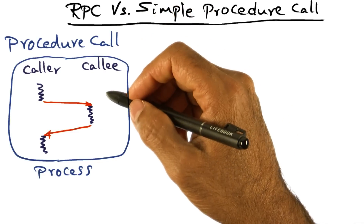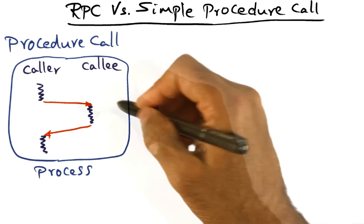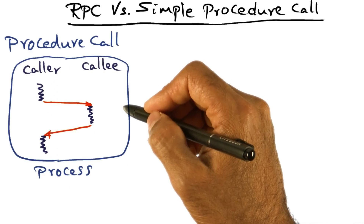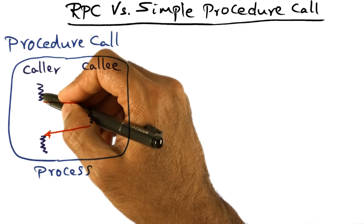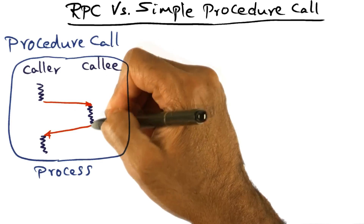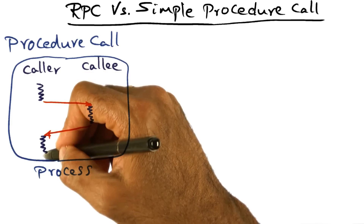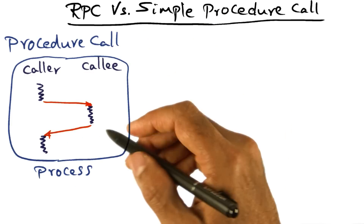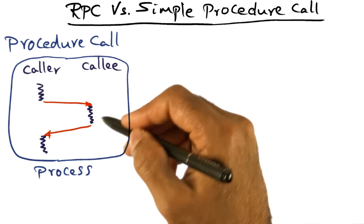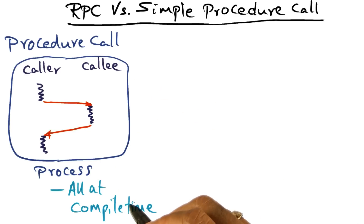All of you know how a simple procedure call works. There is a caller. You have a process in which all the functions are being compiled together and linked together to make an executable. When a caller makes a call to the callee, it passes the arguments on the stack. The callee can execute the procedure and then return to the caller. The important thing is that all of this interaction is happening at compile time.